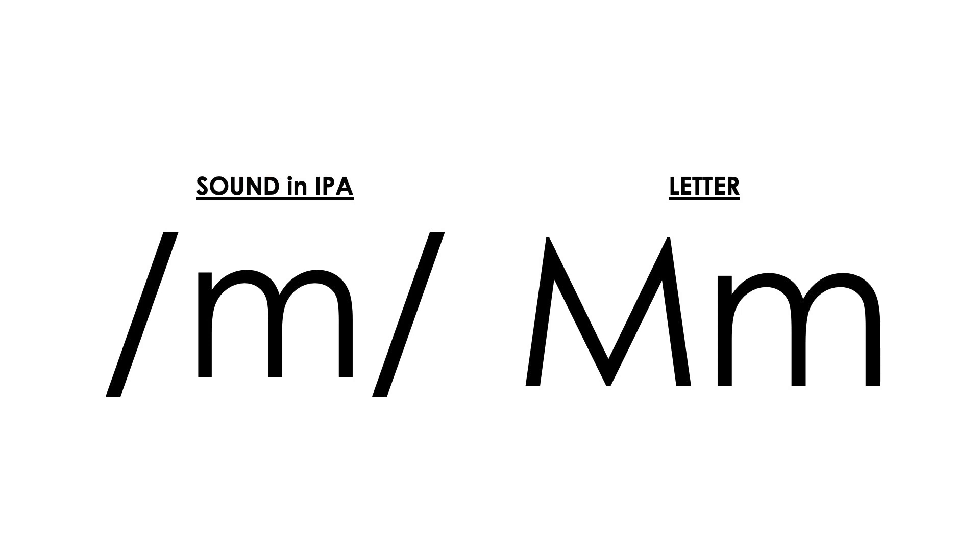If you like IPA, you might notice that the symbol for mmm looks a lot like the written letter. I've noticed in IPA that consonants have a symbol that looks a lot like the letter itself. That's not true for vowels.